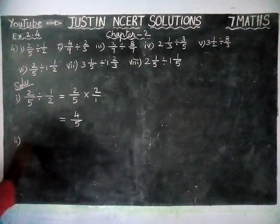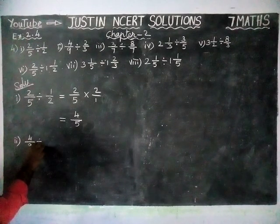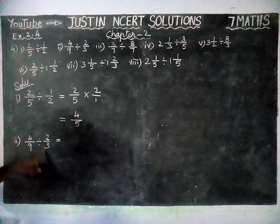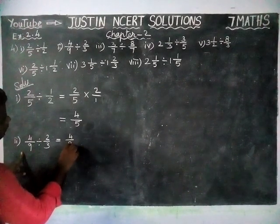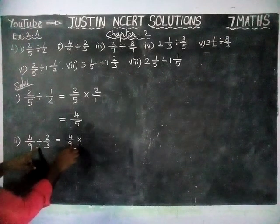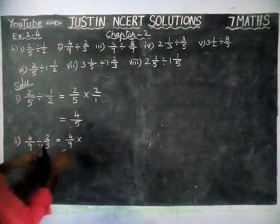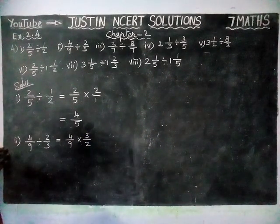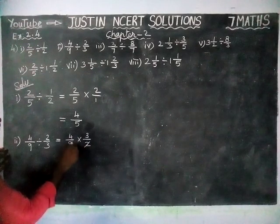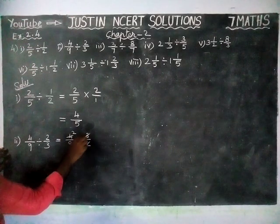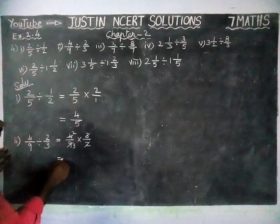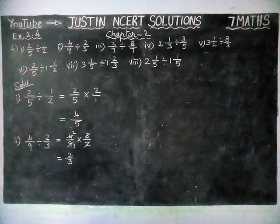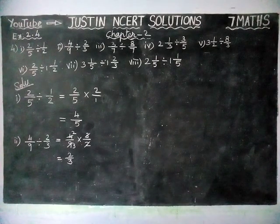Second question: 4/9 divide 2/3 is equal to — we have to find the reciprocal for 2/3. So, 4/9 multiply — this division is converted into multiplication — and the reciprocal for 2/3 is 3/2. We can simplify: 2 and 4 cancel, 3 and 9 cancel, giving 2/3. So, the answer for the second question is equal to 2/3.